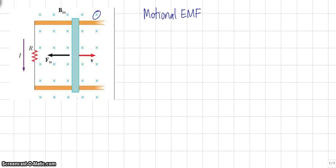We are going to assign a value L to the length of the bar and the distance between the rails. And the bar is moving with speed V to the right. The magnetic field has strength B and the resistance is R.